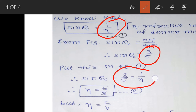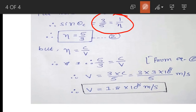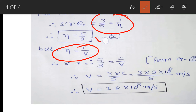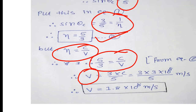Also, from the topic of refractive index, we have the relation η = c/v. We have obtained η = 5/3, so we can compare: 5/3 = c/v. It is asked to find the velocity of light in that liquid, so making v the subject: v = 3c/5.